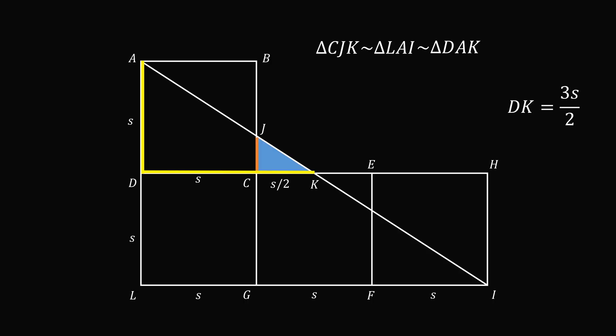Next, CJ divided by CK is equal to DA divided by DK. And this is equal to 2 divided by 3. But we know that CK is equal to S over 2. So we can solve this equation for CJ to get that CJ is equal to S over 3.